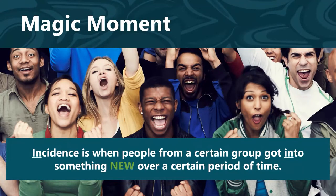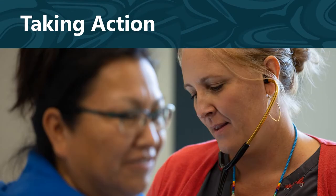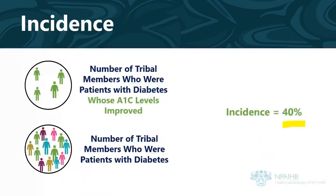Suddenly, you remember the video you watched on prevalence and incidence. You know that incidence is when people from a certain group — tribal people with diabetes — got into something new or improved, like improved A1C levels, over a certain period of time. So you take action and ask the clinic to provide a report with the incidence of patients who are tribal members with diabetes whose A1C levels improved in 2021. You know this number will include tribal members with diabetes whose A1C levels improved in 2021 divided by the number of tribal members who were patients at the clinic with diabetes in 2021. You learn that the incidence of tribal members with improved A1C levels in 2021 was 40%.